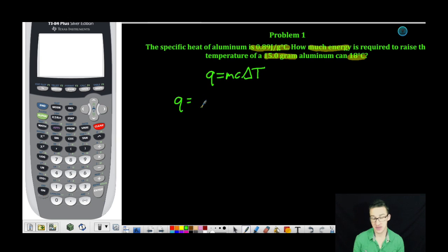The mass of our substance, in this case an aluminum can, is 15.0 grams.